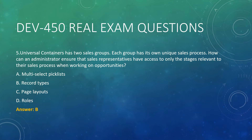Question 5. Universal Containers has two sales groups, each with its own unique sales process. How can an administrator ensure that sales representatives have access to only the stages relevant to their sales process when working on opportunities? A. Multi-select picklists. B. Record types. C. Page layouts. D. Roles. Answer: B.